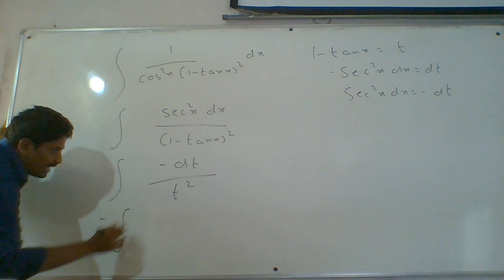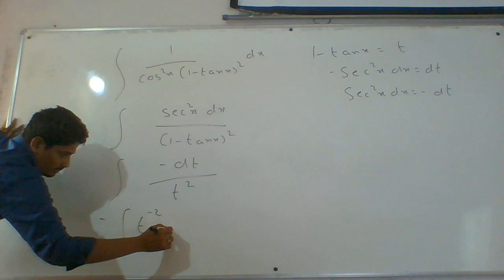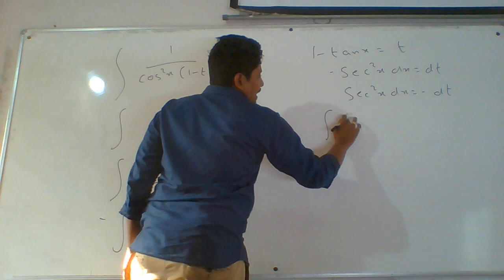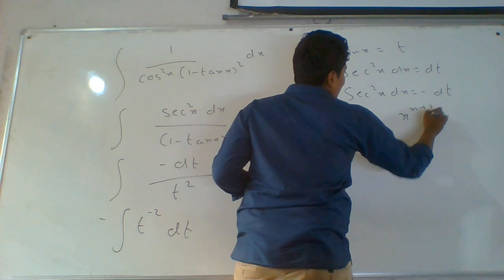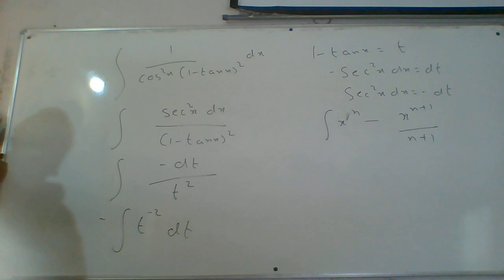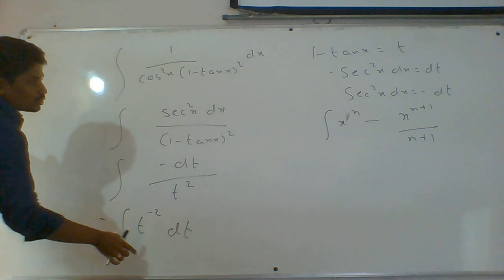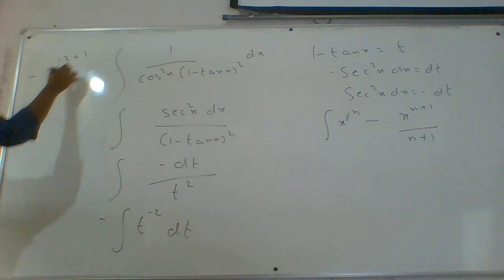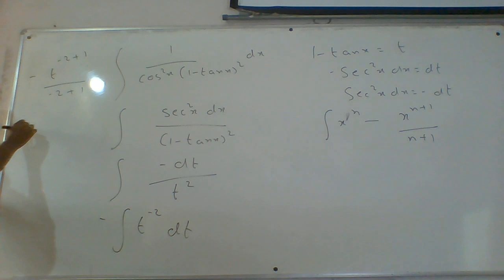Take minus outside and t square in denominator becomes t power minus 2. It is of the form integral x power n. The formula is x power n plus 1 by n plus 1. For t power minus 2: t power minus 2 plus 1 by minus 2 plus 1 gives t power minus 1 by minus 1. The minus and minus cancel, giving t power minus 1, which equals 1 by t.